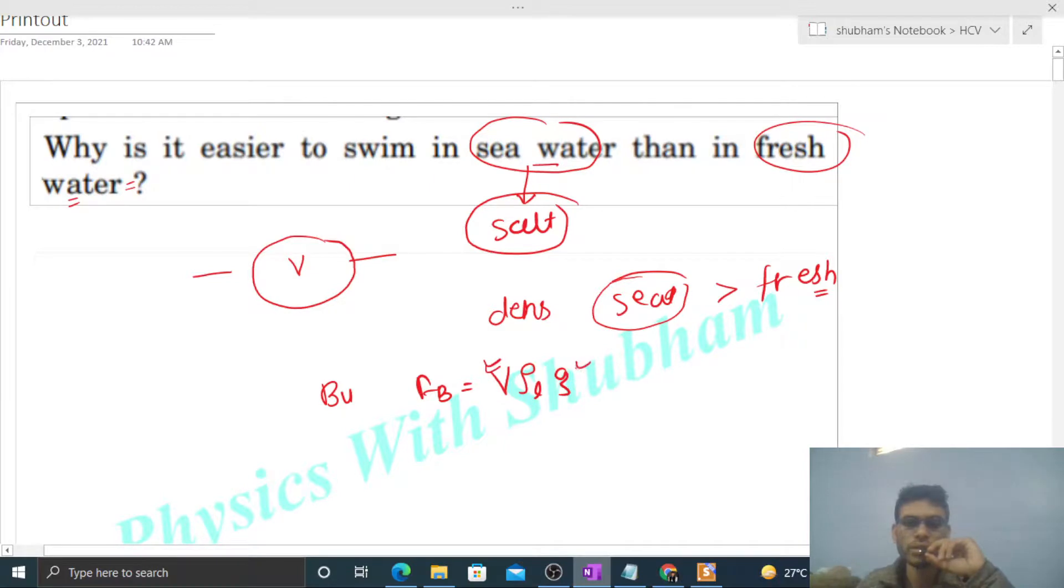And density of the liquid is higher for seawater. That's why the buoyancy force will be greater in seawater. So it will be easier to swim because you cannot sink easily.